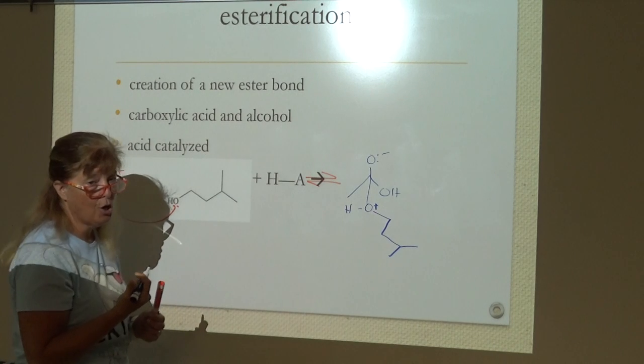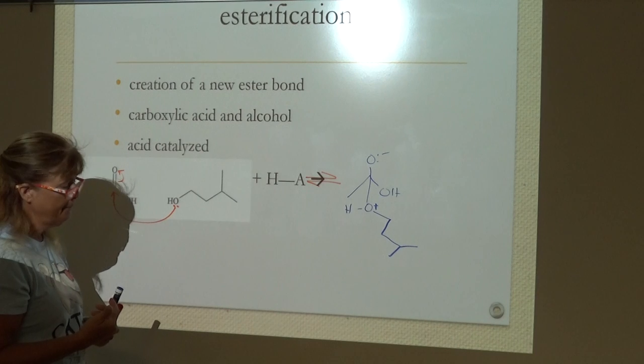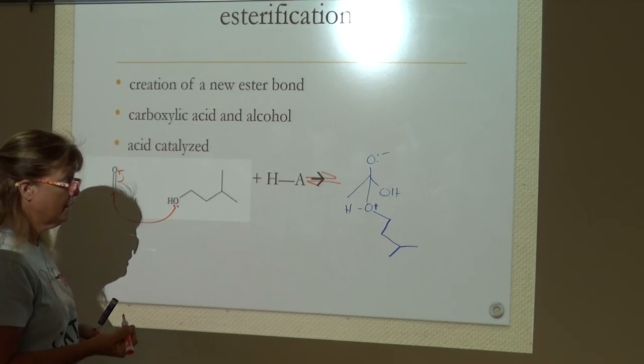Make sure and count your carbons. That gives us our zwitterion intermediate. It is an intermediate. There's no way to clean it up, so the process is going to continue.